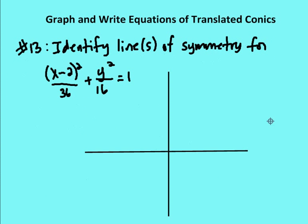For the final question, I need to identify the lines of symmetry. First I figure out what type of conic it is. Both variables are squared, so it's not a parabola. The denominators are different, so it's not a circle. The sign between the terms is plus and not minus, so I know it's going to be an ellipse.